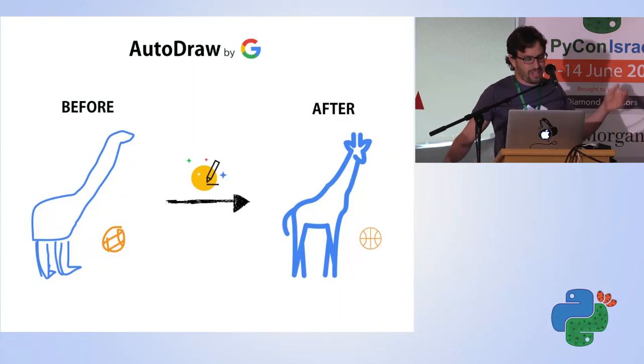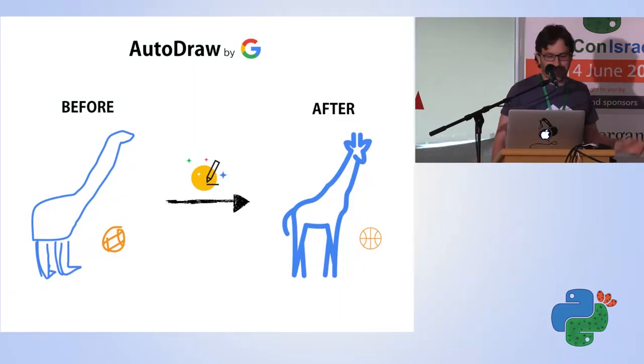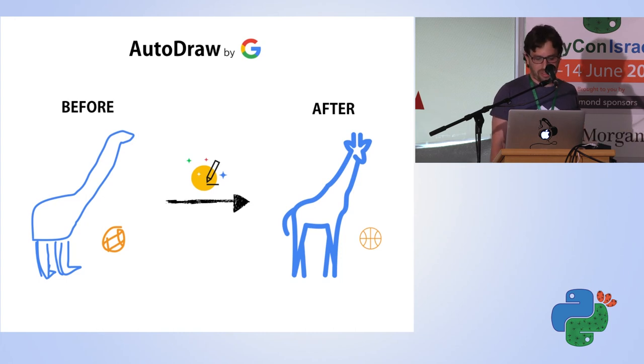Probably you don't give a shit about passwords—you just want to know how did I draw this beautiful giraffe. I used a tool called AutoDraw by Google. It's really cool. It uses machine learning to make this beautiful giraffe I drew into a more beautiful giraffe.